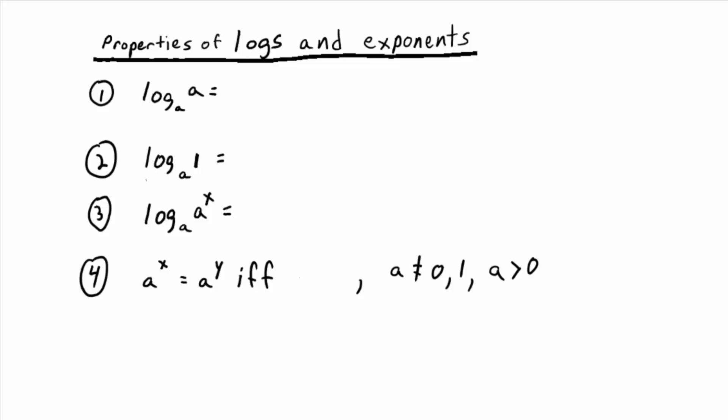So it turns out that log number one, property number one, it turns out that log base A of A is equal to one. You see that in log form, you don't understand where it comes from. Just change it to exponential form, what is it saying? A to the, this A, right? A to the what equals what?